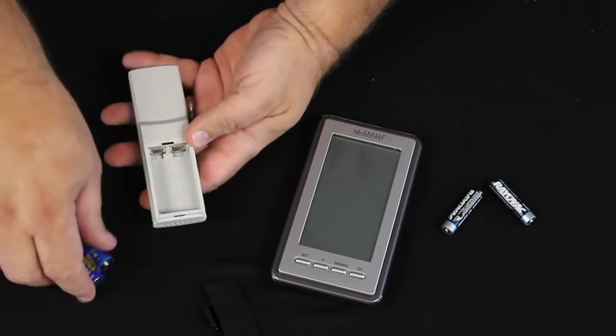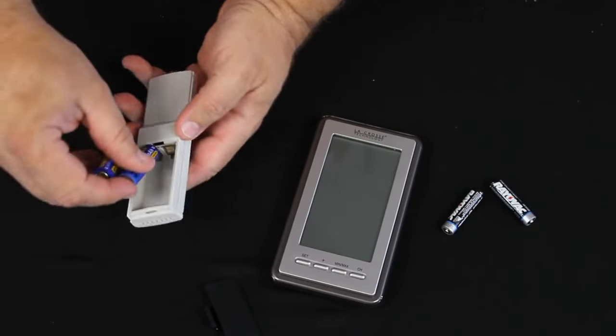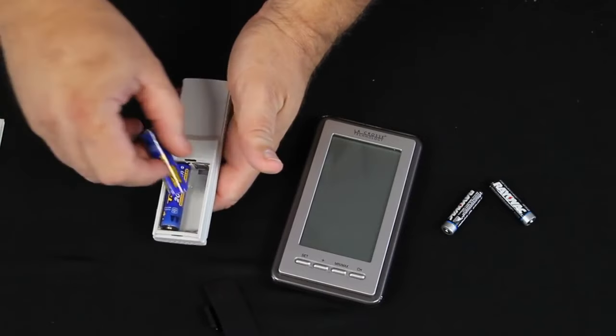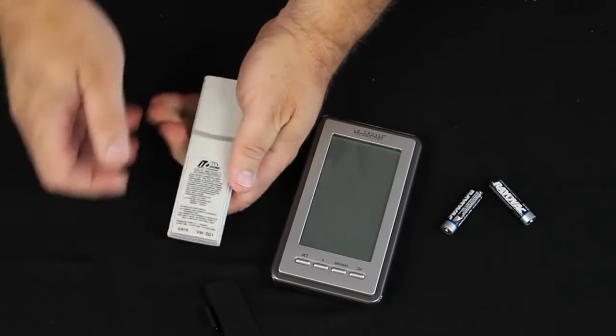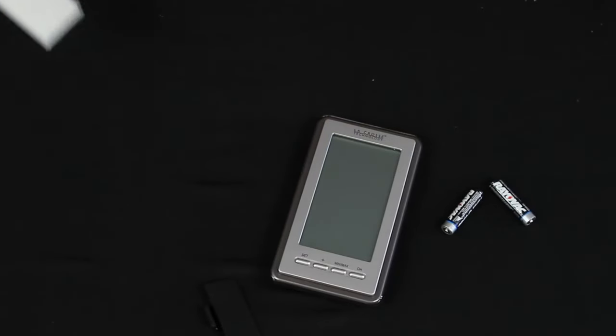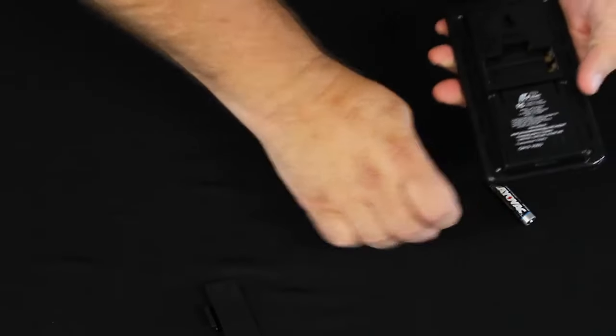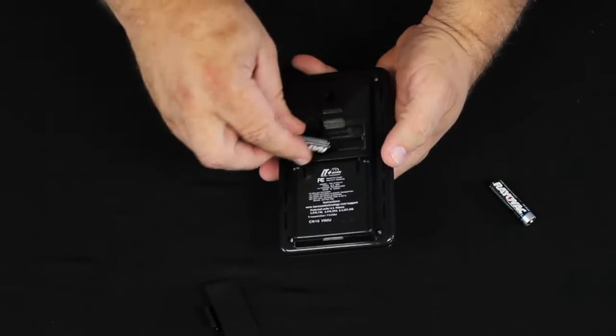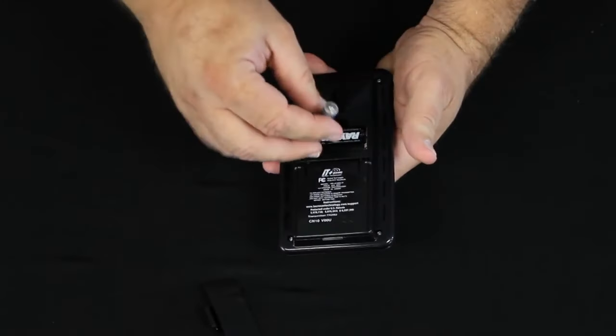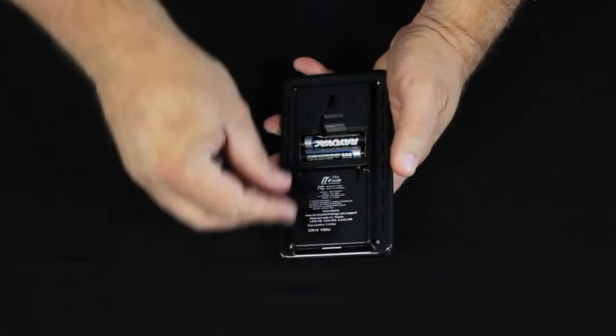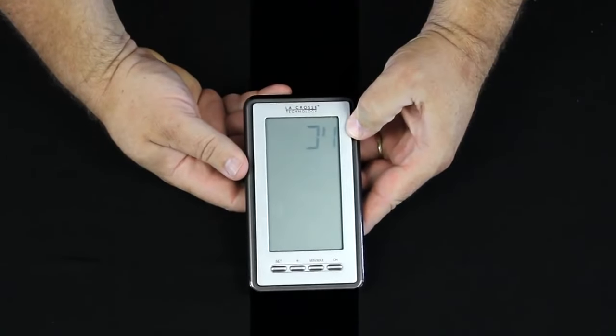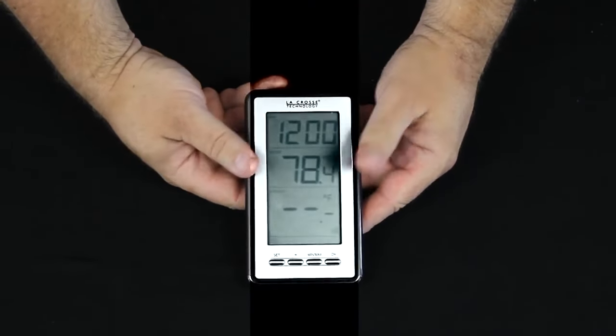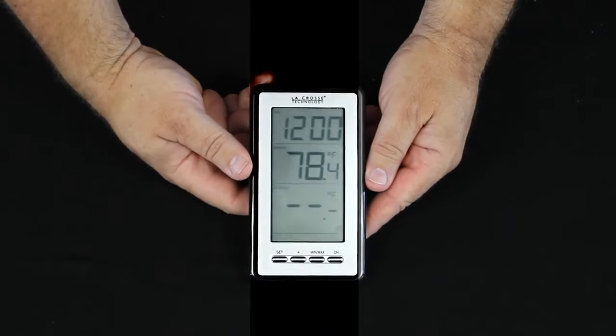At the end of that 15 minutes you're going to put a new set of batteries into the sensor first. Move that sensor about five or six feet away. Put a new set of batteries into the display station itself and it should start up exactly the same way as it did initially giving you the firmware version, 12 o'clock, 78.4 degrees and searching.